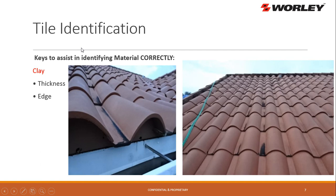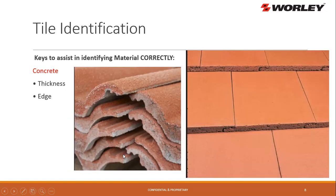The way to identify a tile is by thickness and edge. These are clay tiles — the thickness is thinner and the edge is very smooth. You can see the smoothness and how thin they are. Also visible here is the bird stop on the eaves and the gutter apron. Concrete tiles are identified the same way — you can see they're much thicker and the edge is rough, showing the concrete.